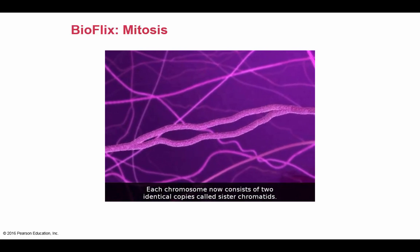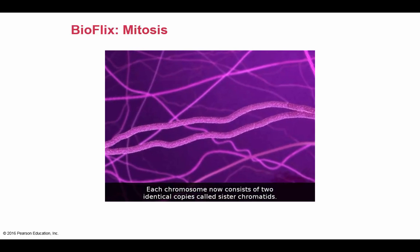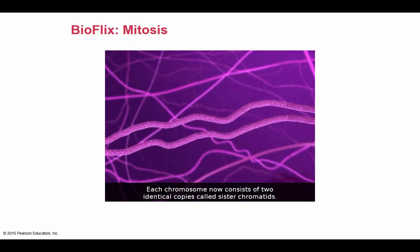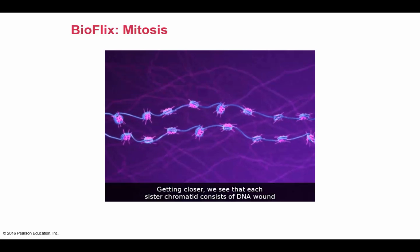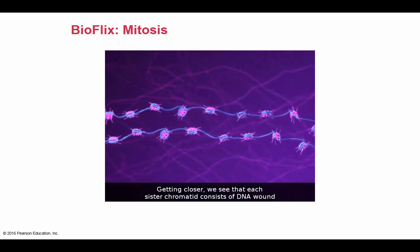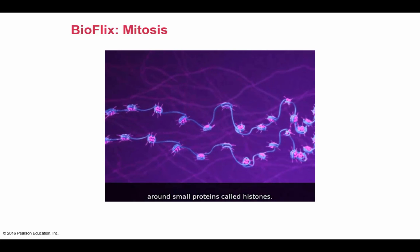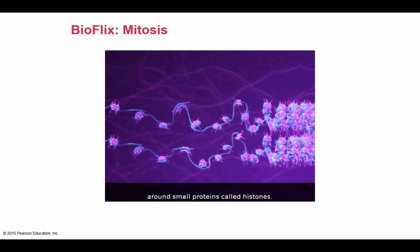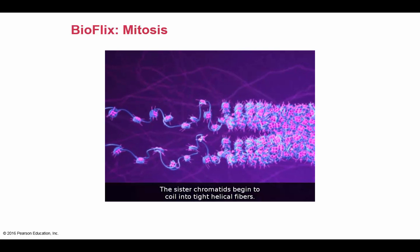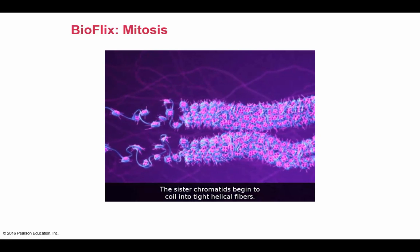Each chromosome now consists of two identical copies called sister chromatids. Getting closer, we see that each sister chromatid consists of DNA wound around small proteins called histones. The sister chromatids begin to coil into tight helical fibers.